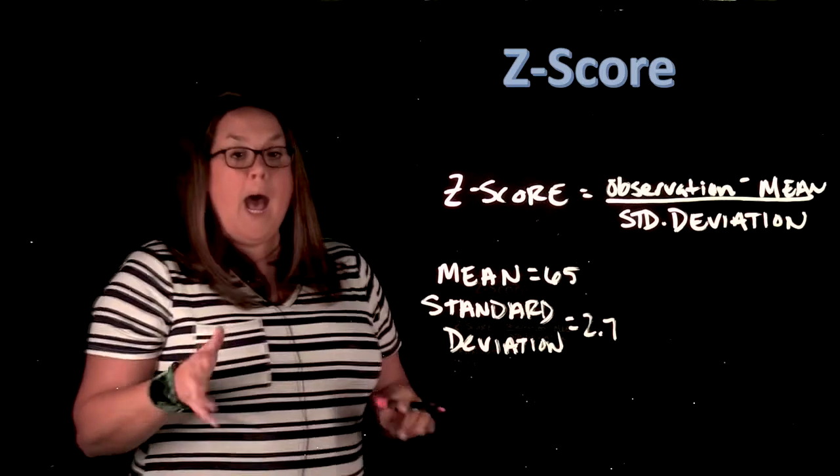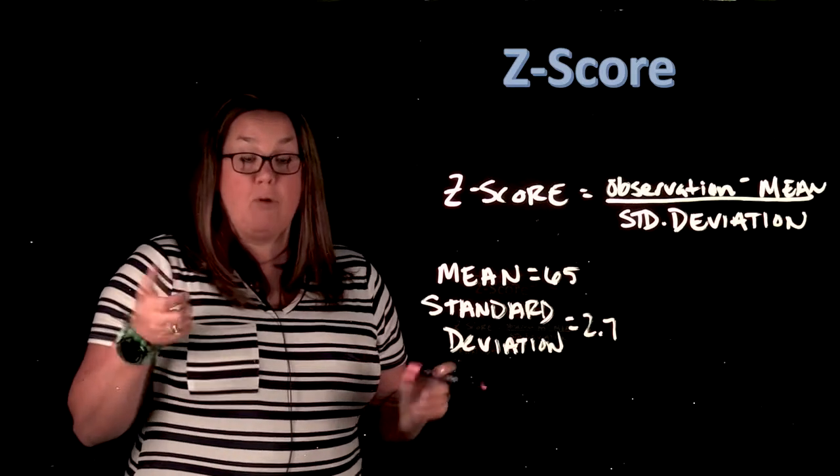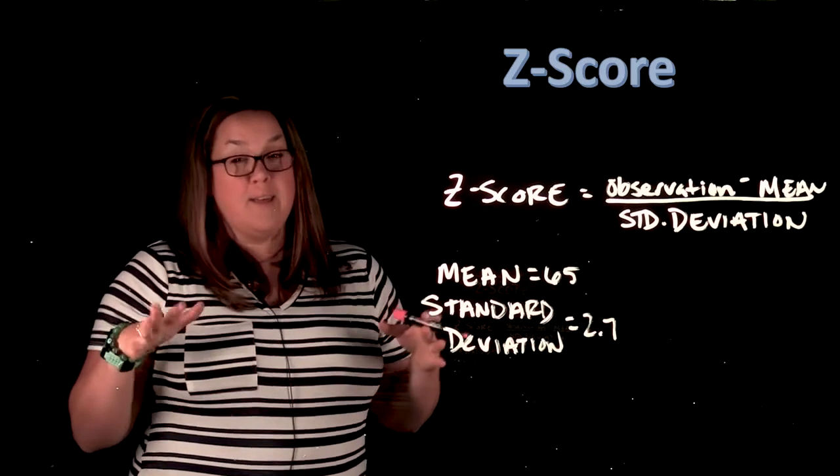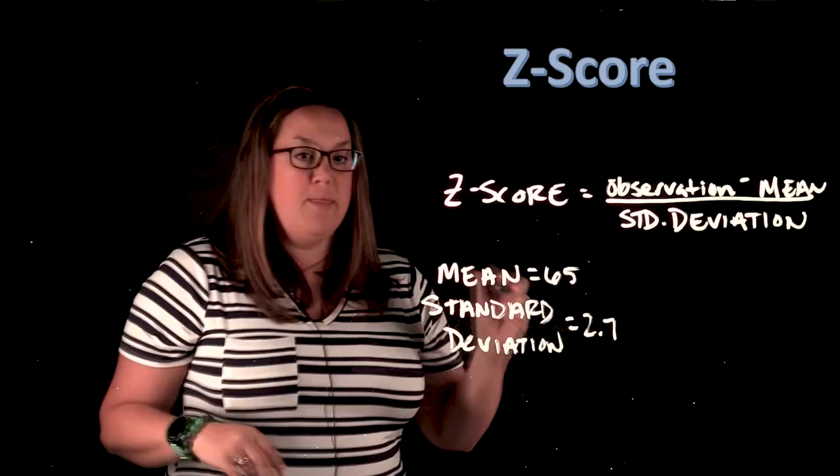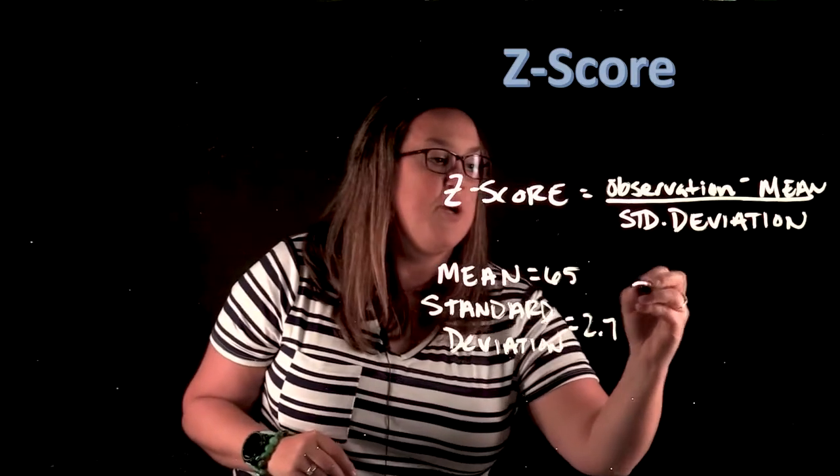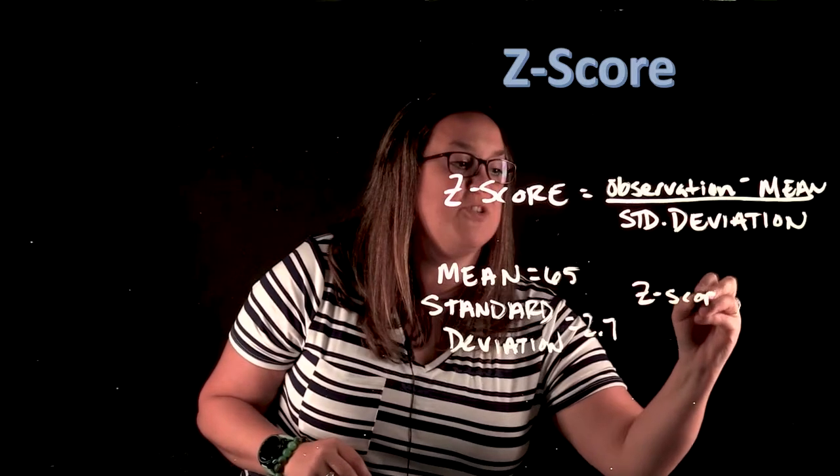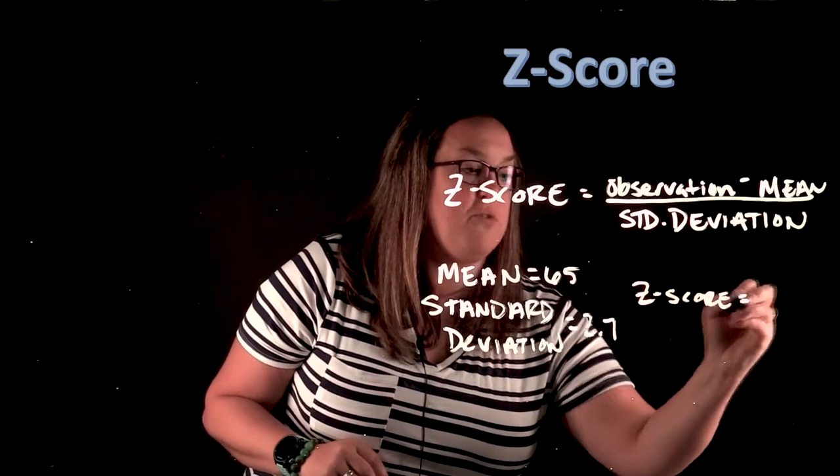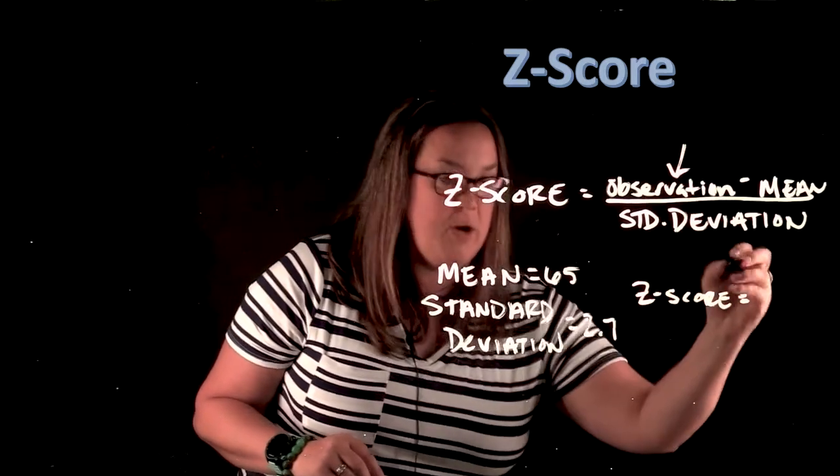Now, I am going to calculate a z-score for my height. And I think, I may have shrunk a little bit, but I think that my height is 67 inches. So to calculate my z-score, I'm that observed value, so I'm this here. So my height, 67 inches,